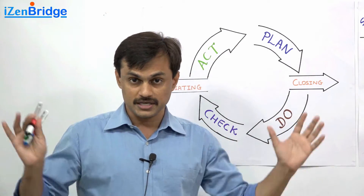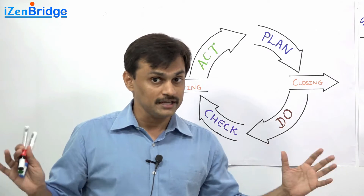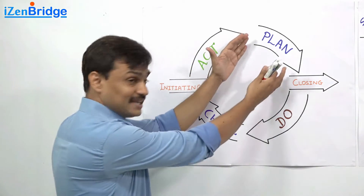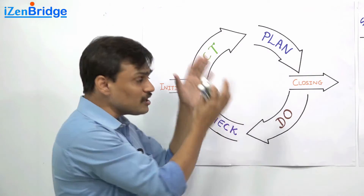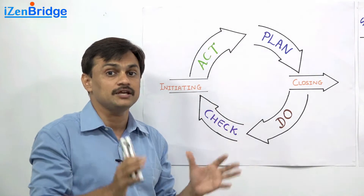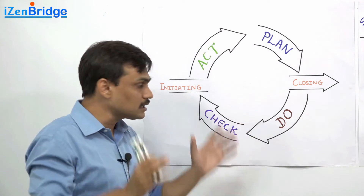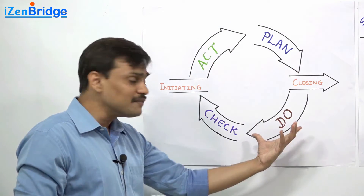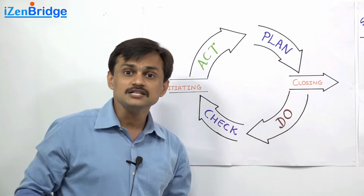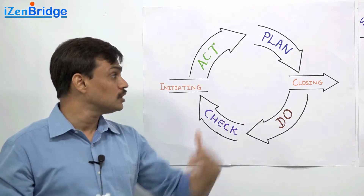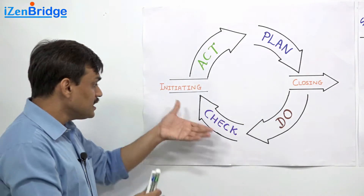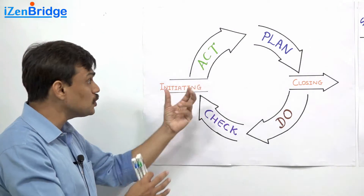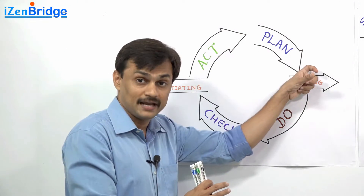In the same way, if you look at our project management processes — the 49 processes — we can also group them under Planning. We have processes which help us in doing planning, grouped under the Planning process group. Then we have the doing processes — the processes which help us in executing the work as per the plan. And checking and acting: the part of checking and acting is Monitoring and Control, and some part of acting is replanning.